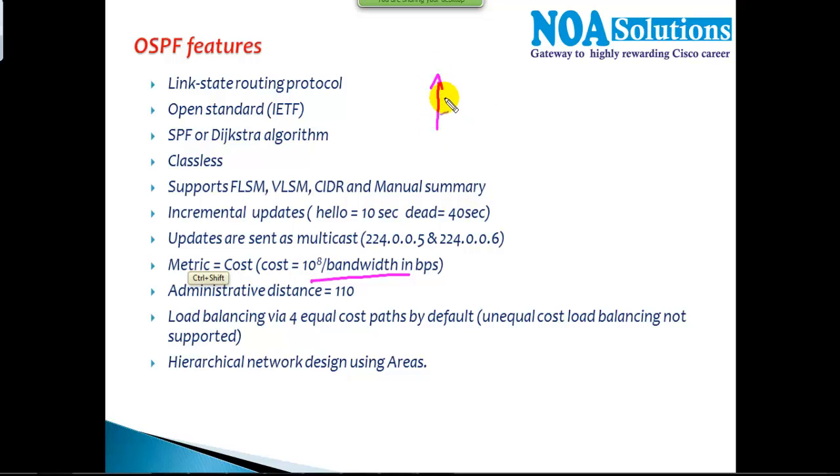If you have more bandwidth, the cost will come down automatically. More bandwidth means the cost will come down, which means the least cost is considered as the best route. Least cost means the best route—if you have more bandwidth, the cost will come down automatically.